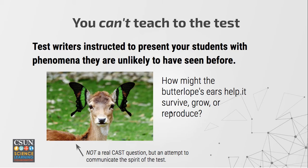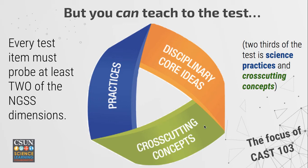What would your students do? How would they bring to bear all of their understanding of science to answer this question? That's what we need to focus on. And actually you can teach to this test, because every one of these test items probes at least two of the NGSS dimensions: the science and engineering practices, the disciplinary core ideas, and the cross-cutting concepts. Two-thirds of this test is stuff we absolutely know — the SEPs and the CCCs. Come back for CAST 103 and we'll dig in deeper to that.